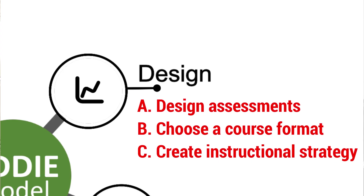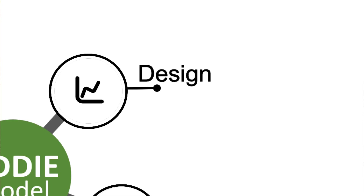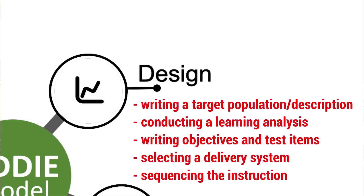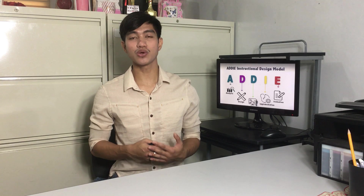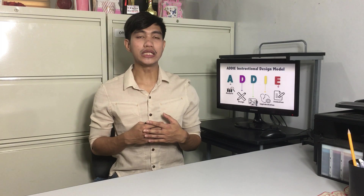The design phase involves using the outputs from the analysis phase to plan a strategy for developing the instruction. During this phase, you must outline how to reach the instructional goals determined during the analysis phase. Elements of the design phase may include writing a target population description, conducting a learning analysis, writing objectives and test items, selecting a delivery system, and sequencing the instruction. The outputs of the design phase will be the inputs for the development phase.